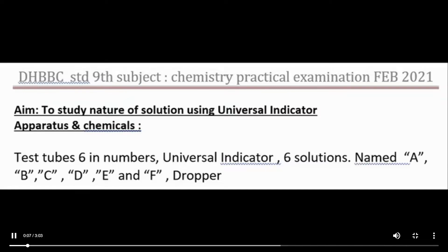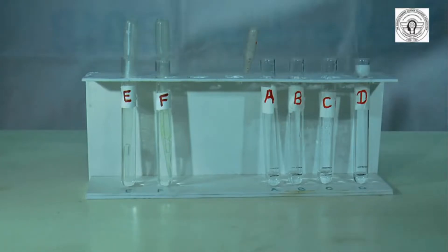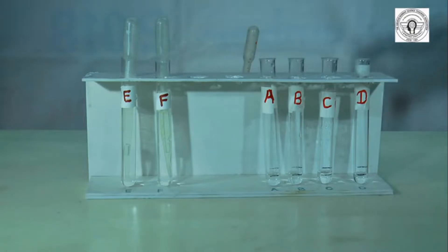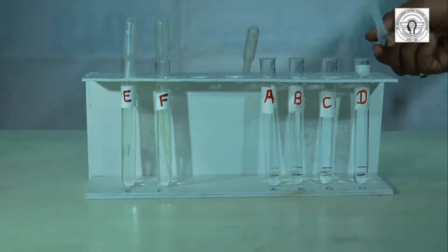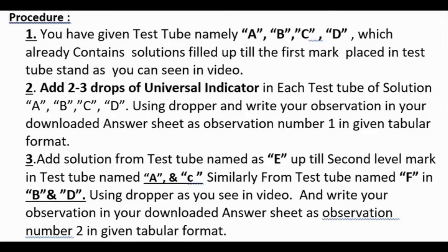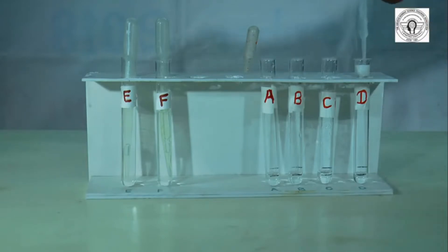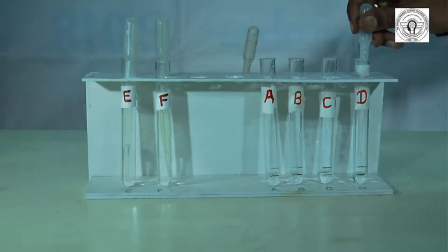9th Standard Chemistry Practical. The aim is to study the nature of solutions using a universal indicator. You are given 6 test tubes with 6 different solutions. In test tubes A, B, C, and D, you have to fill the different solutions till the first mark, as you can see here.